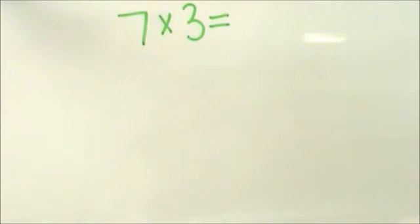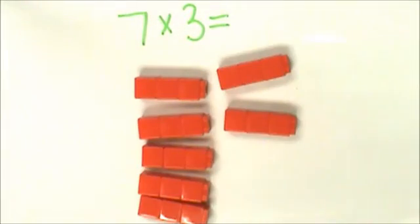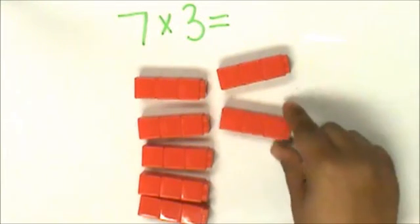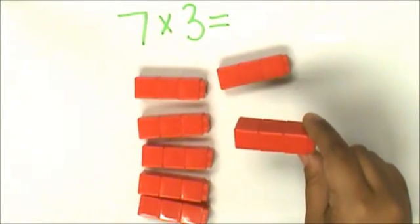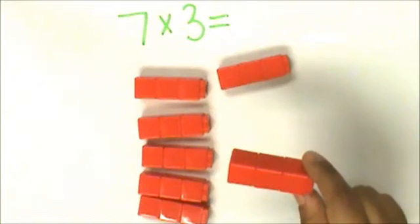First, we can make 7 groups of 3. But you can use your twos facts to make it easier to multiply. We are going to decompose 3 into 2 and 1.